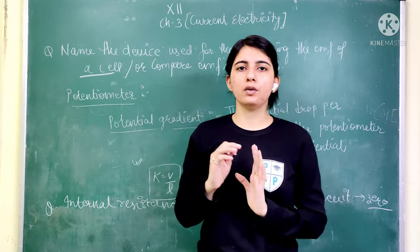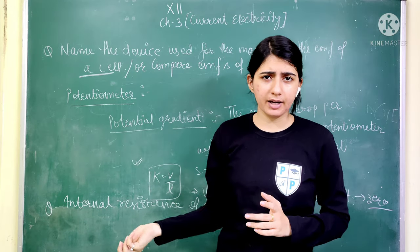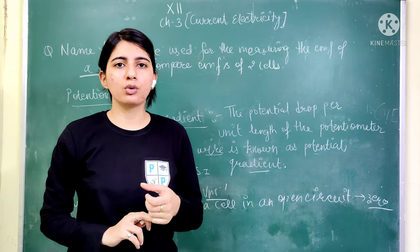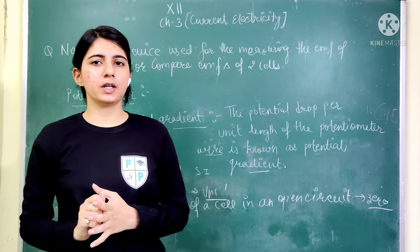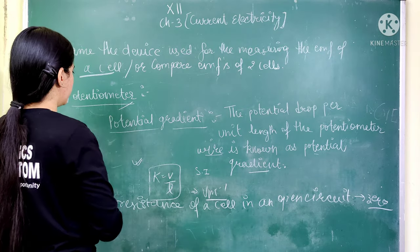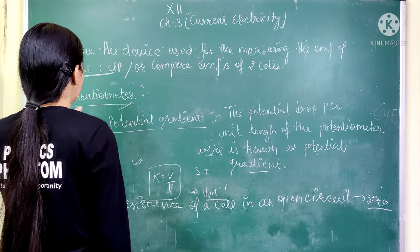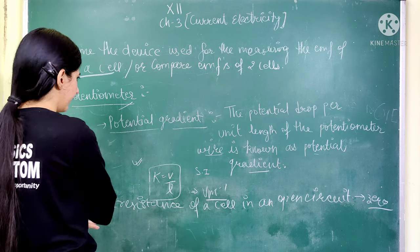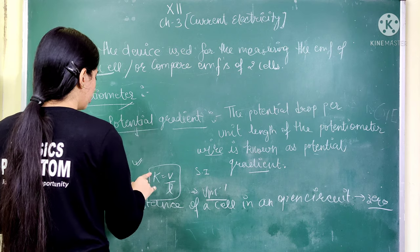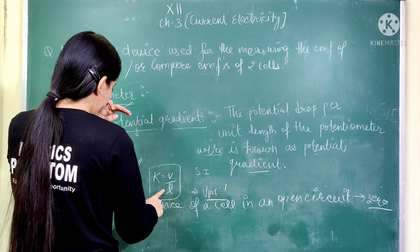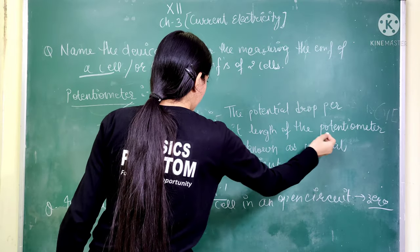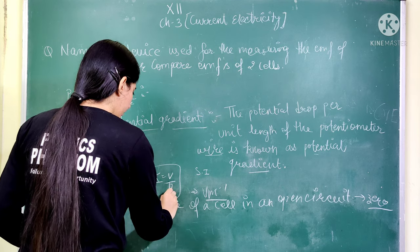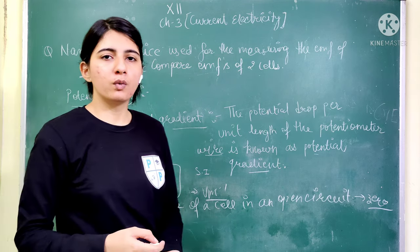The answer is the potentiometer. The potentiometer is a device that calculates the EMF of a cell. You should also know the formula: K is equal to V divided by L. The SI unit of K is volt per meter.